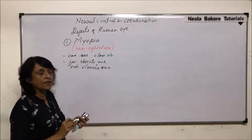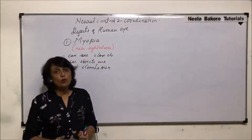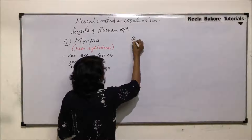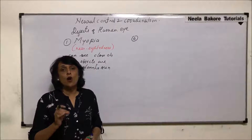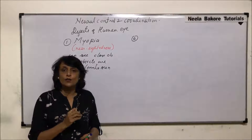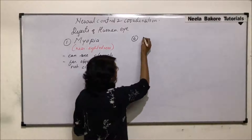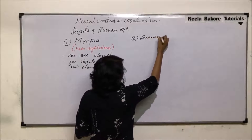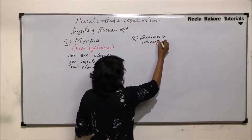Now let us understand why this defect is caused. There are two reasons. The first reason: the lens in our eye, which is a convex lens, its power of convergence increases. We call it an increase in convexity or converging power — so an increase in converging power.